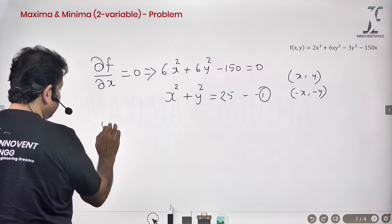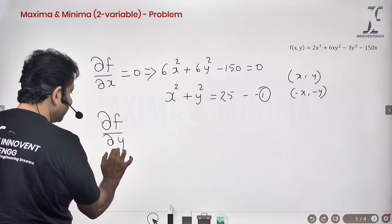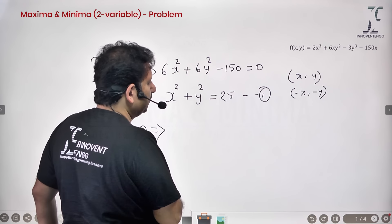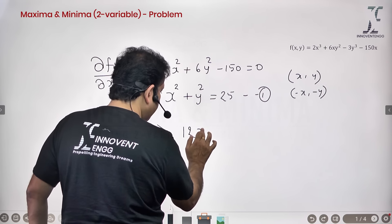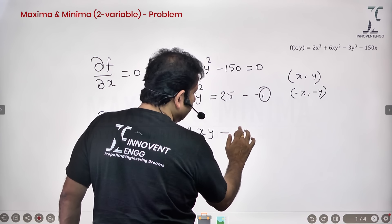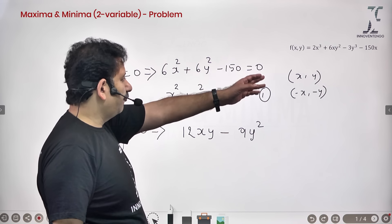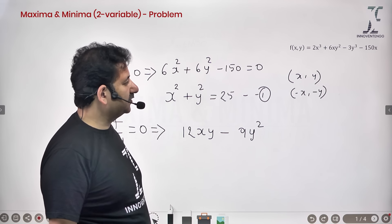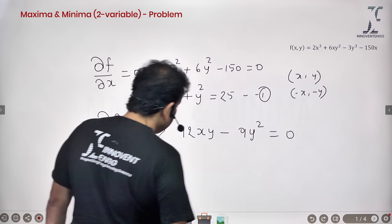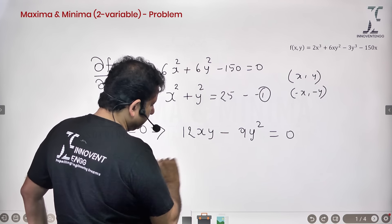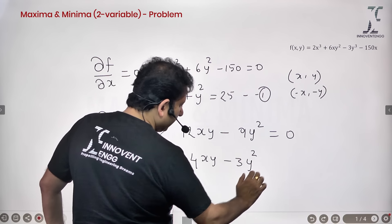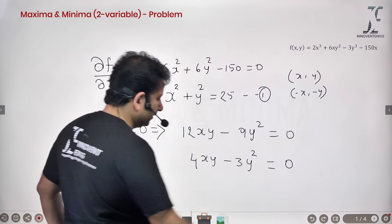Now I have equation 1. The next equation comes from the partial derivative of the function with respect to y set equal to 0. Differentiating with respect to y: the first term is knocked out, the second term gives 12xy, and the third term gives -9y² (since 3 times the power 3 gives 9y²), and the last term is knocked out. So 12xy - 9y² = 0. Dividing both sides by 3 gives 4xy - 3y² = 0. Call this equation 2.